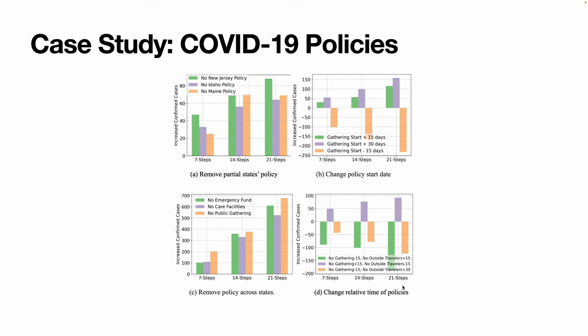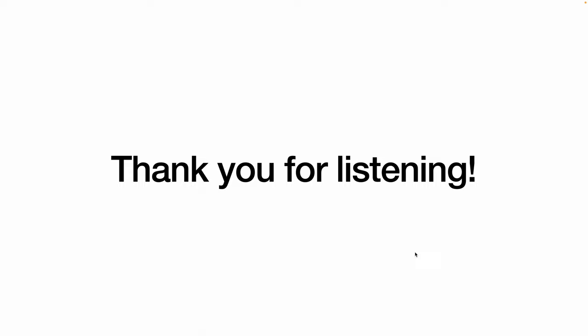Finally, we study the effect of different orders in the policy announcement. We found that initializing the announcement of no public gathering early generally contributed to the reduction in the spread of COVID-19 compared with no travelers from outside states. That's all for today. Thank you very much for listening.